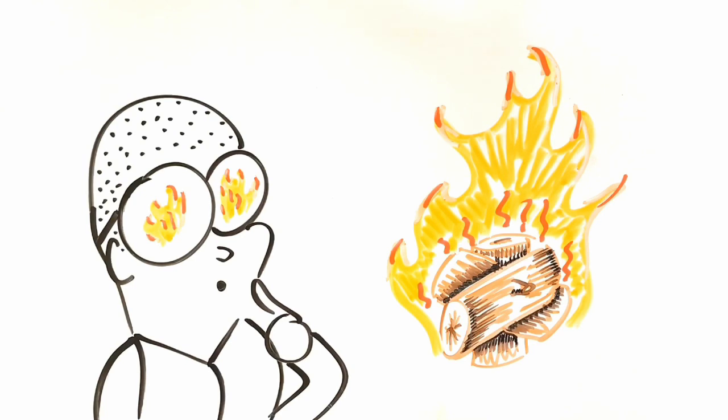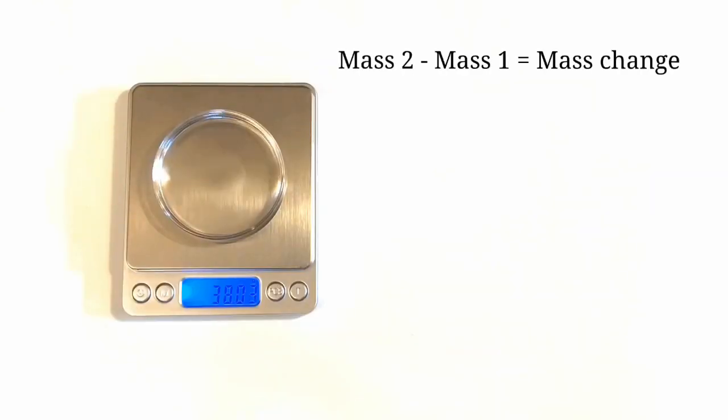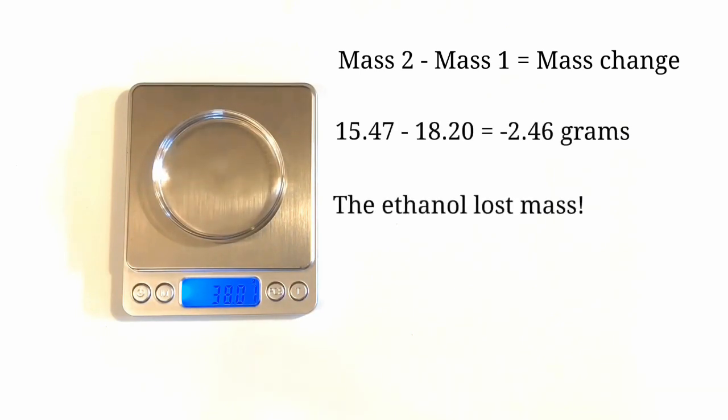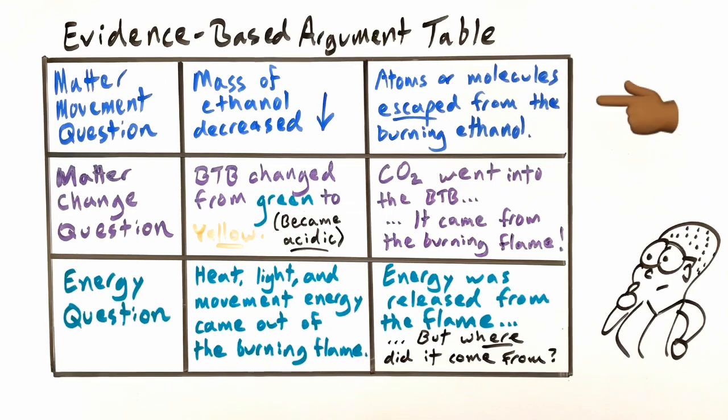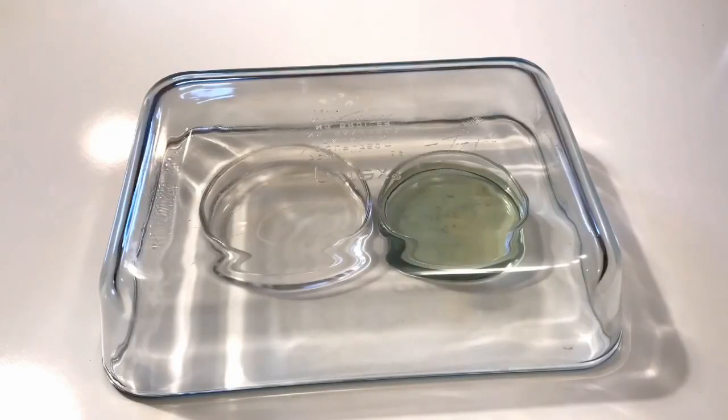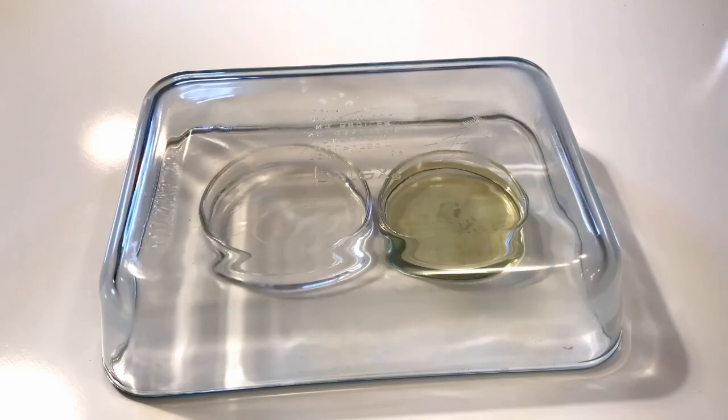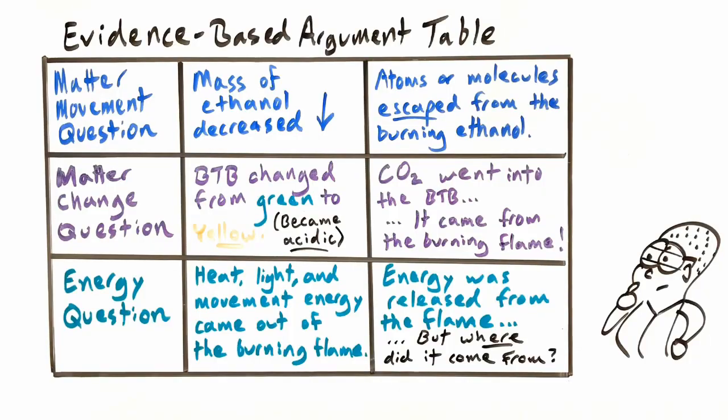First, let's review what we saw at the macroscopic scale. We observed that the ethanol lost mass when it burned, and that means that molecules escaped from the ethanol while it was burning. We also saw that the gases that came out of the ethanol turned the BTB acidic, as indicated by the color change from green to yellow.